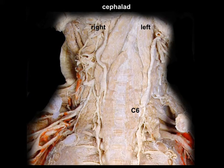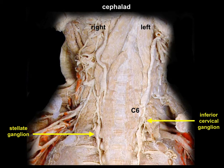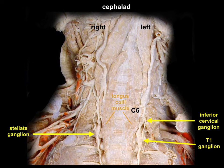The inferior part of the sympathetic trunk — meaning the stellate ganglion itself — or, as seen on the other side, the inferior cervical ganglion and first thoracic ganglia are separated. They are situated on the lateral border of the longus colli muscle. As for the stellate ganglion itself, seen here on the right side of the specimen, it is no longer on top of the longus colli muscle.